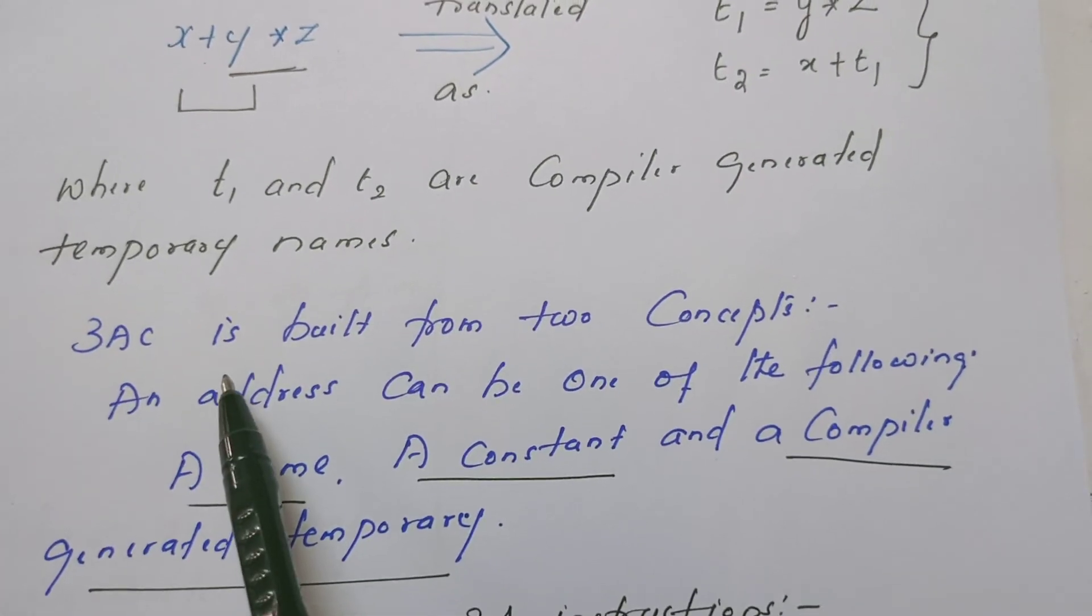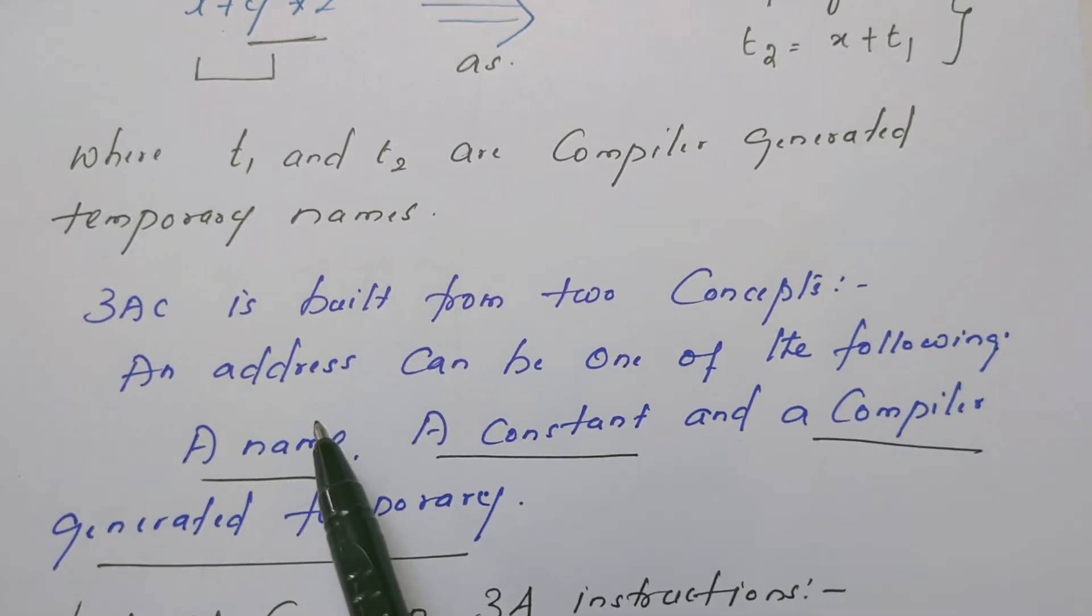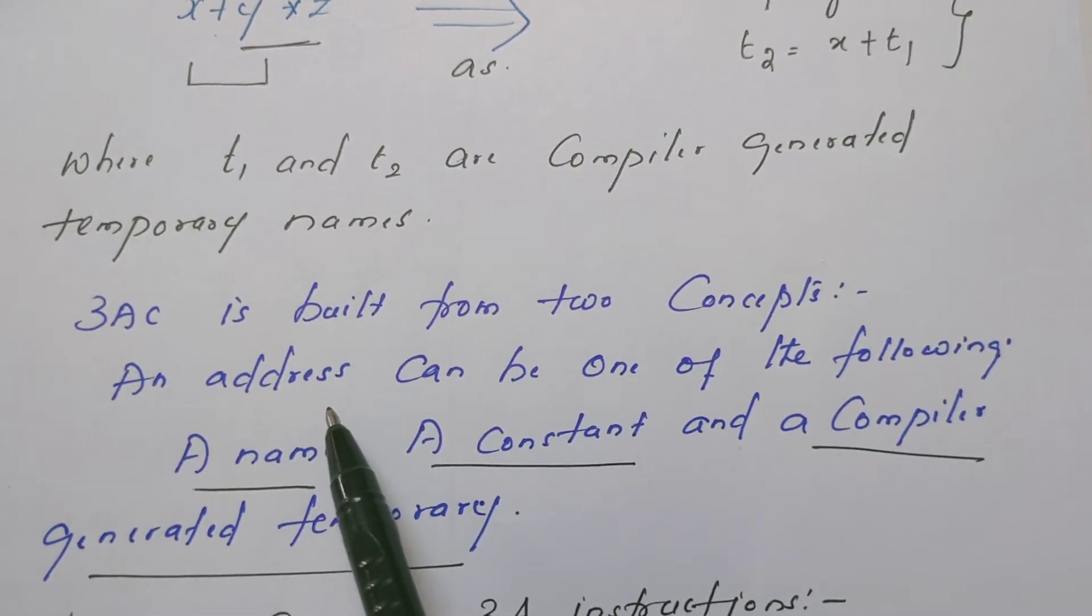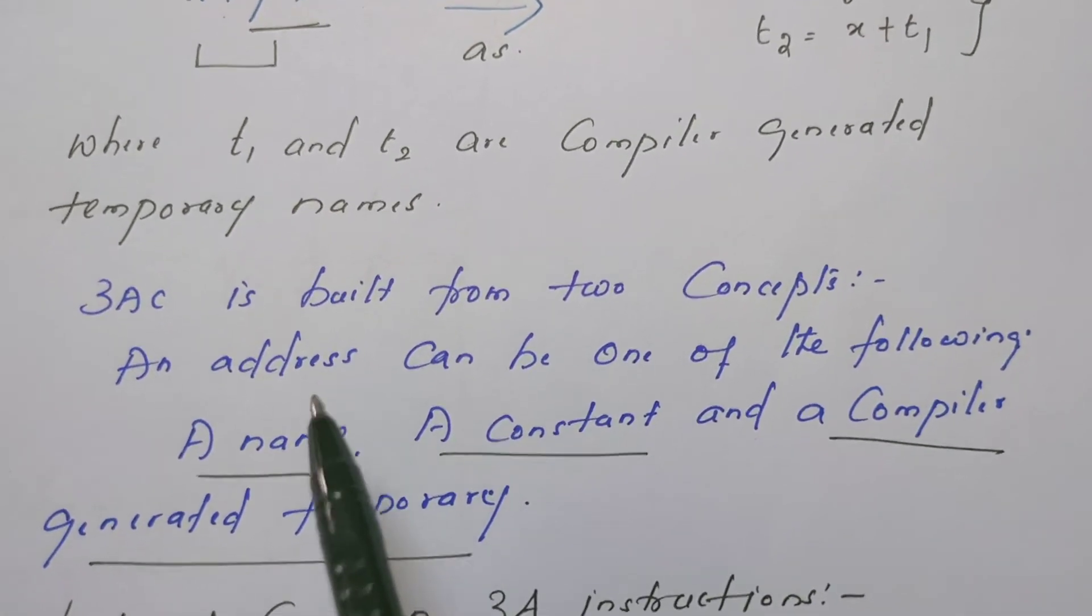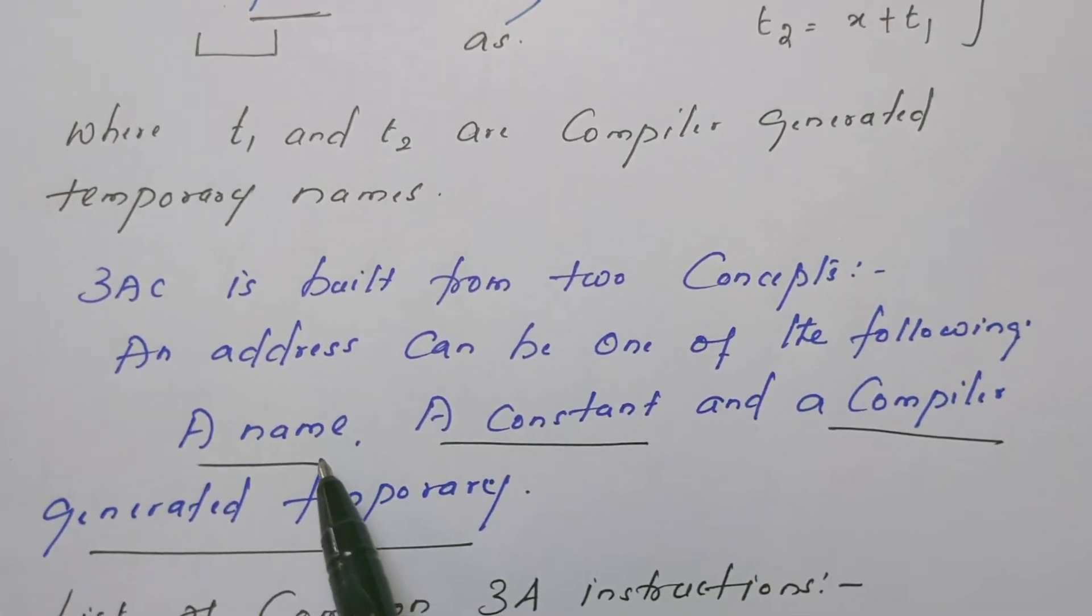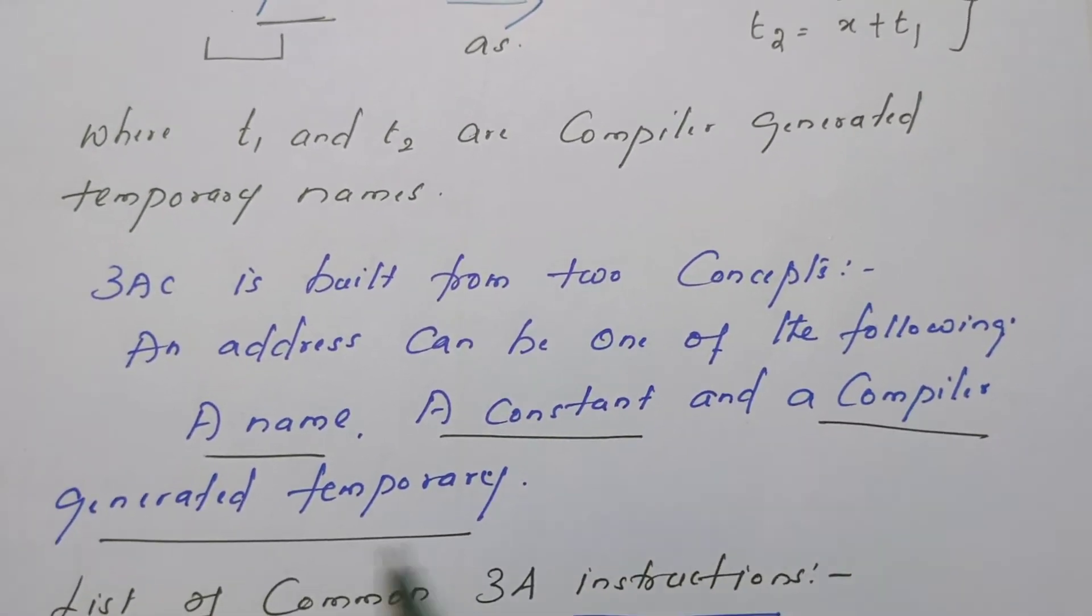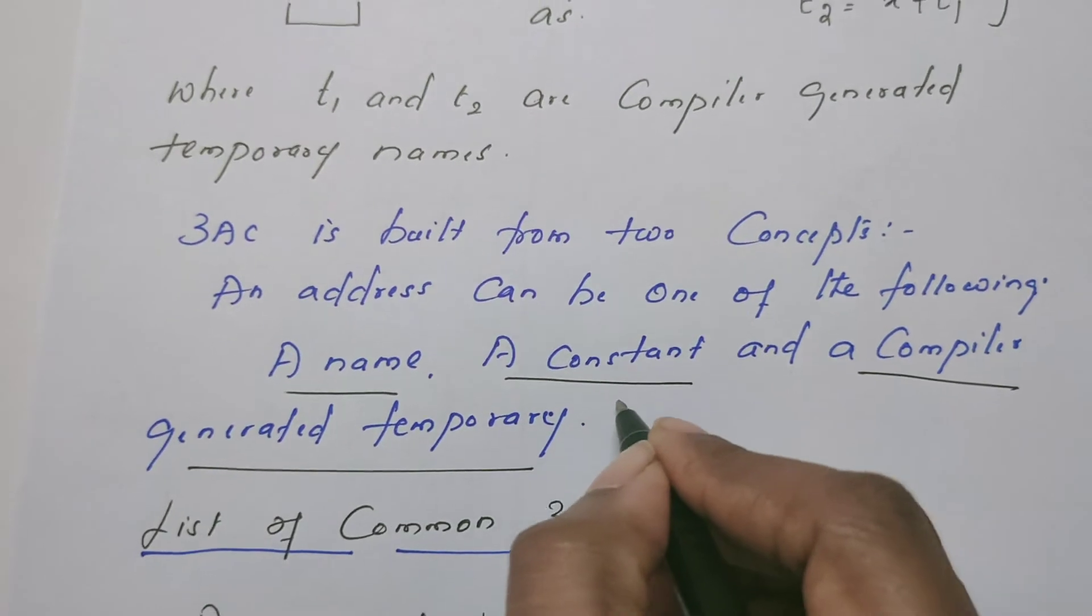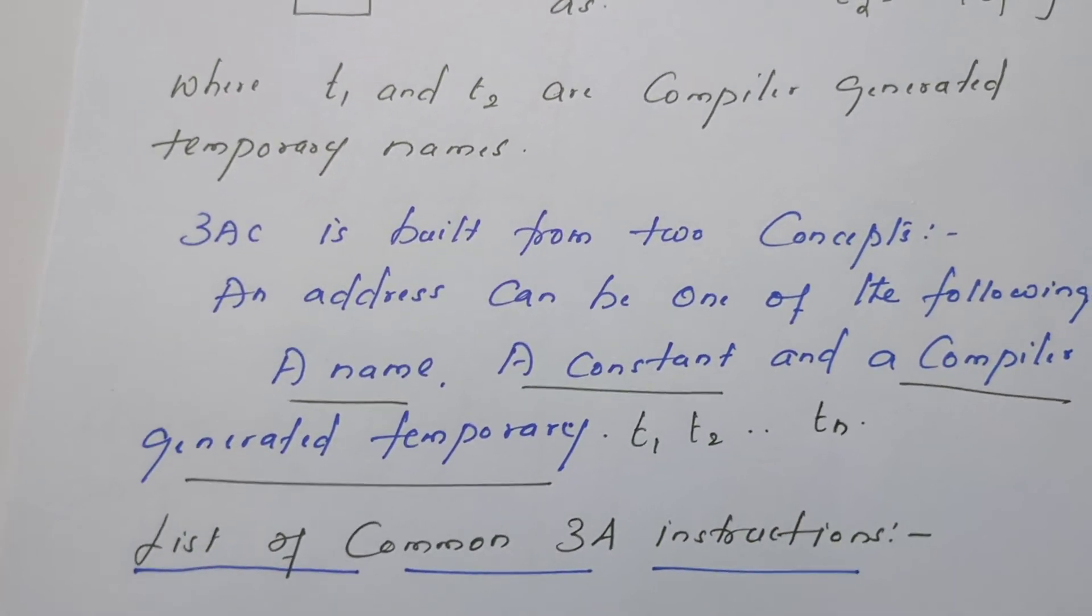3 address code is built from two concepts. One concept is address, the other concept is instruction. What is an address? An address can be a name in your instruction, it can be a constant, or it can be a compiler generated temporary name such as t1, t2, etc., tn.